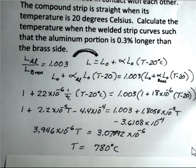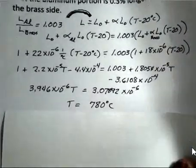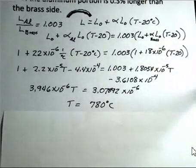And I did not look up the melting point of aluminum and brass, but I think it's higher than that. Perhaps I'll do that later and change this problem if that turns out to be higher than the melting point of aluminum or brass. But 780 degrees Celsius.